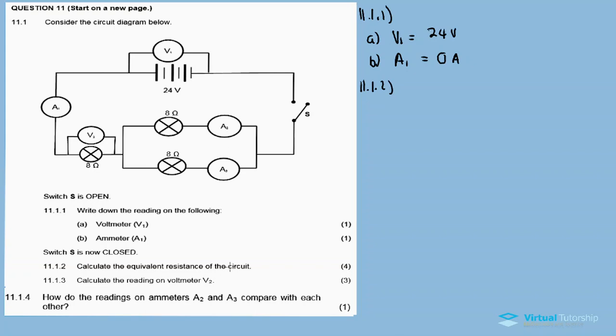Now switch S is closed. 11.1.2: Calculate the equivalent resistance of the circuit. We'll calculate the total resistance for the whole circuit, but first we'll calculate the total resistance for the parallel connection.